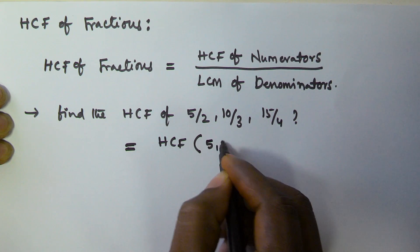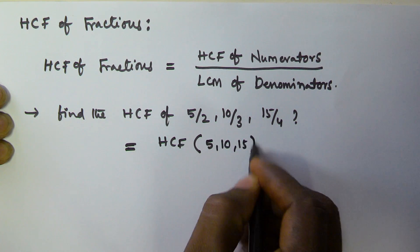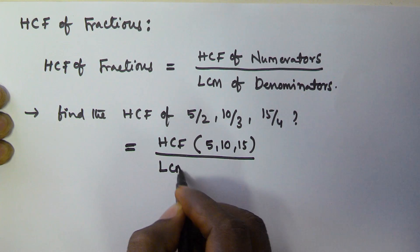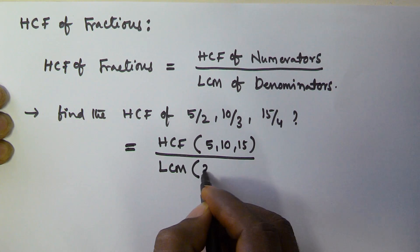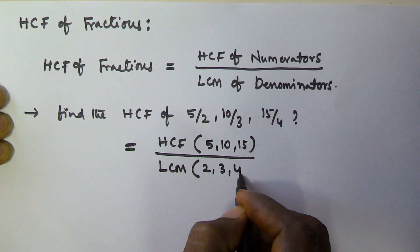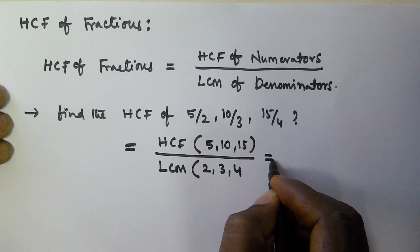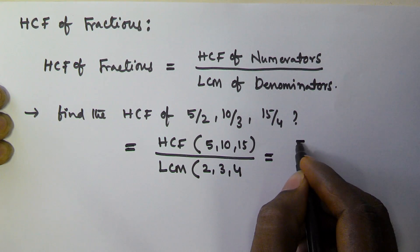So if you find the HCF of 5, 10, 15, that is going to be 5.